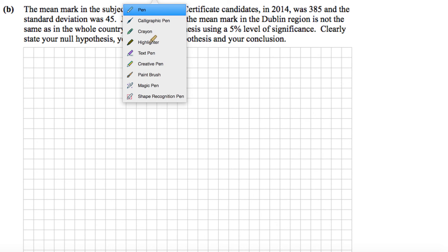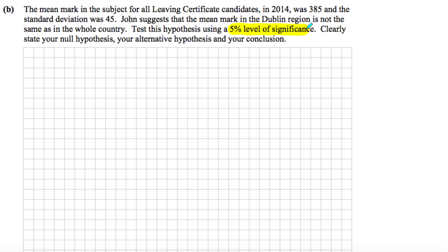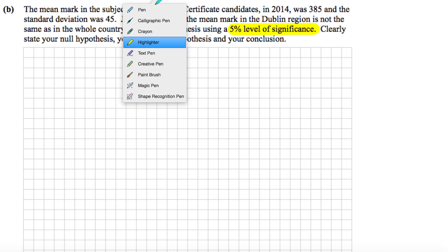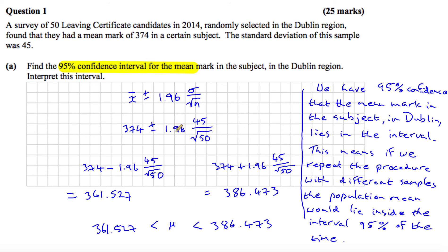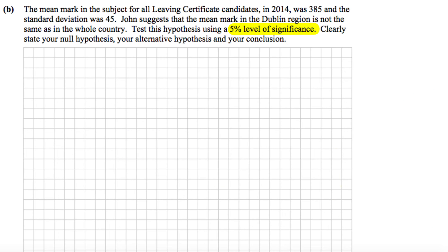Well, the 5% level of significance is linked to the 1.96 figure which we used in the previous part. So really all we have to do here is look at this population mean and see does it lie within the interval. Now, before we do that, I guess we can state our null hypothesis.